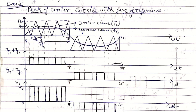The carrier waveform is triangular with switching frequency FC and amplitude AC or VC, and the reference wave has amplitude AR or VR with frequency FR. The switching pulses IG1 and IG2 for the high state switches T1 and T2 are generated by comparing these carrier and reference waves. When VR is greater than VC, switching pulses for IG1 and IG2 are generated. In the negative case, when VR is less than VC, switching pulses for IG3 and IG4 are generated — the opposite logic applies.